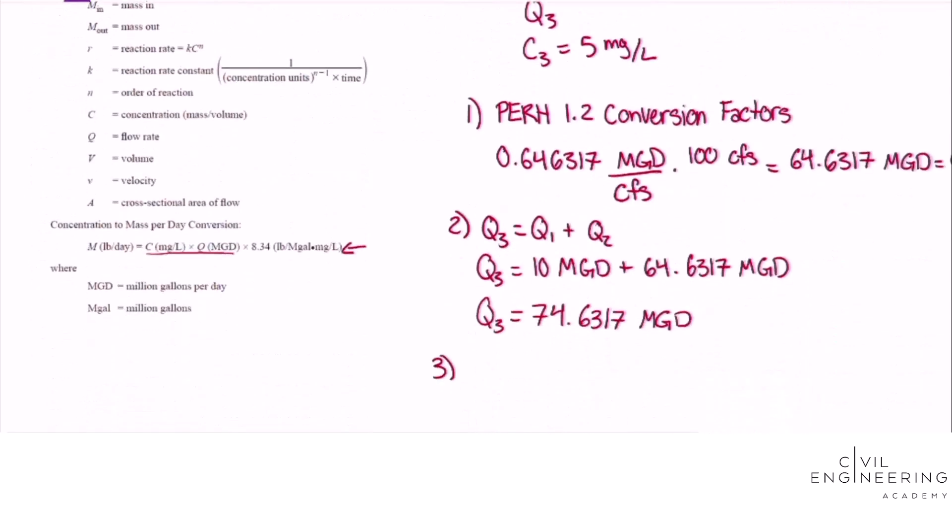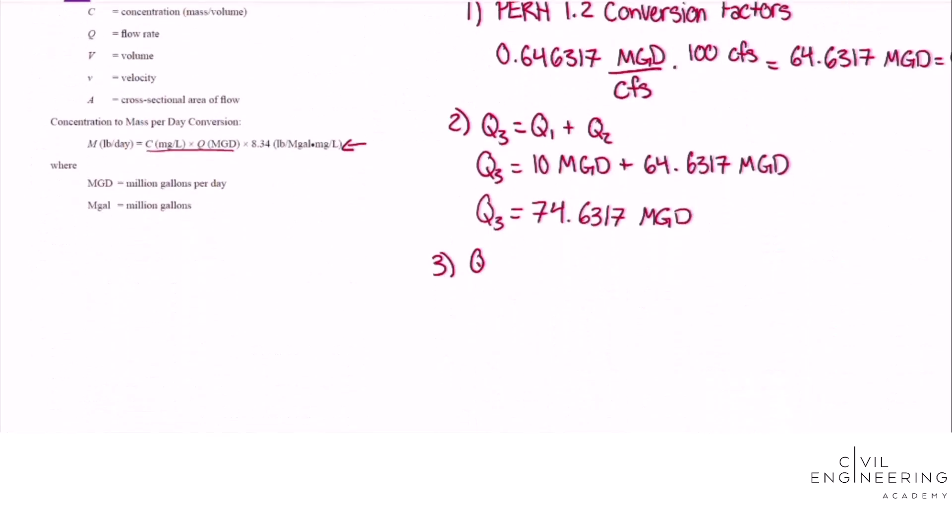Let's write that out Q1C1 plus Q2C2 equals Q3C3, subtract Q2C2 from both sides to get Q1C1 on one side equals Q3C3 minus Q2C2, divide both sides by Q1.